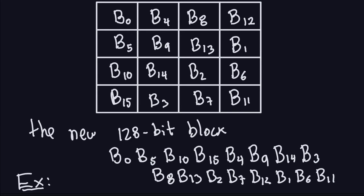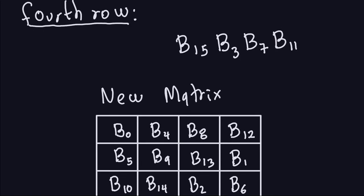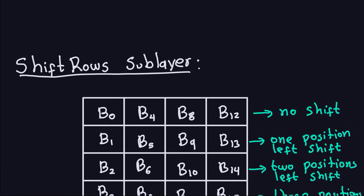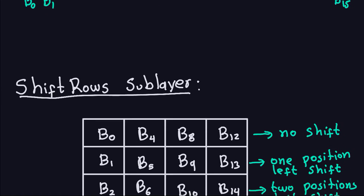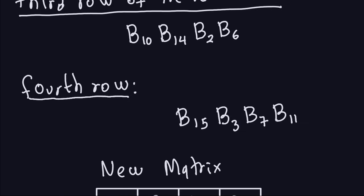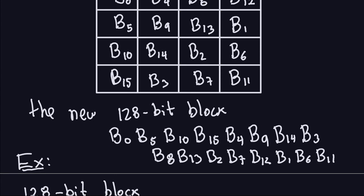Hello and welcome again. In the previous video we started discussing the shift row operation in the Advanced Encryption Standard. We ended up with an array of bytes which gives the shift row output. You start with a 128-bit block divided into bytes b0 through b15, and after applying the shift rows sub-layer you end up with a new 128-bit block where the bytes are rearranged using the shift rows covered in the last video.